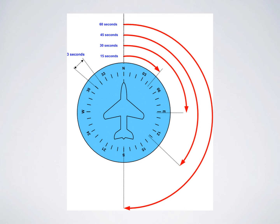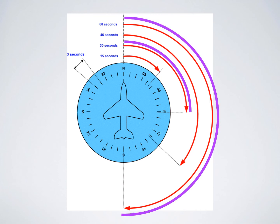A rate one turn is a 360-degree turn executed in two minutes — meaning a 180-degree turn in 60 seconds, and a 90-degree turn in 30 seconds. As long as you are executing a rate one turn, you are turning 10 degrees every three seconds. This allows you to calculate how long to stay in the turn to roll out on a specified heading. The examiner's turn will be greater than 90 degrees (30 seconds) but not greater than 180 degrees (60 seconds), so practice turns within that range.